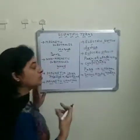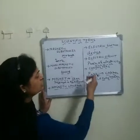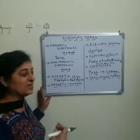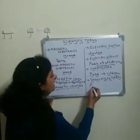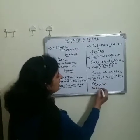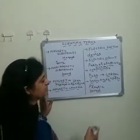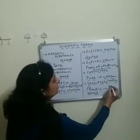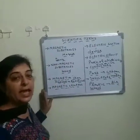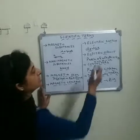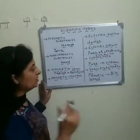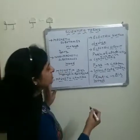Insulators are those substances which do not allow electric current to pass through them. For example, plastic. Air is also an insulator of electricity, because if there is any gap between the wires of an electric circuit, the electricity will not flow — meaning air acts as an insulator.